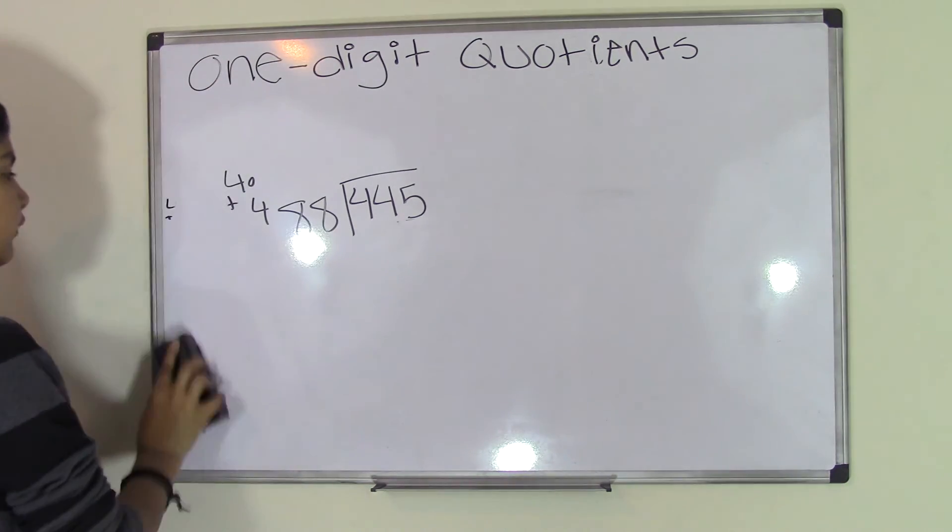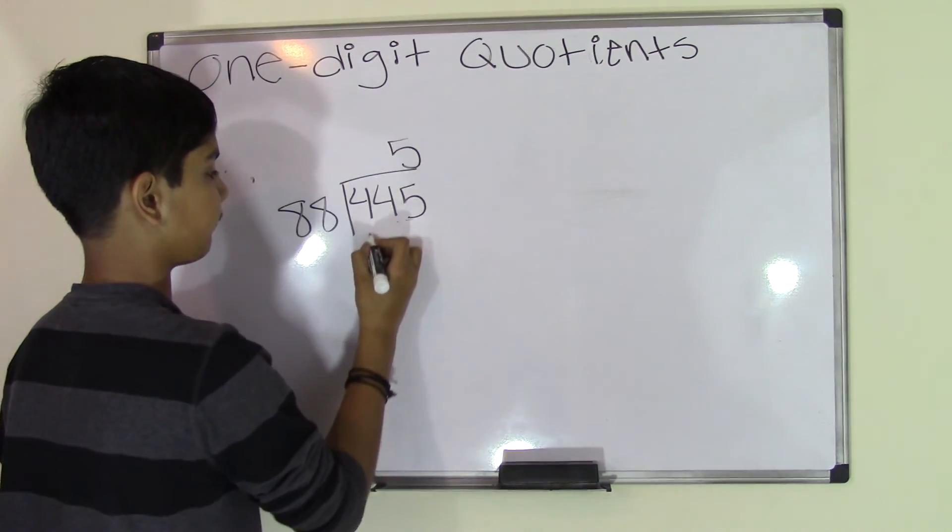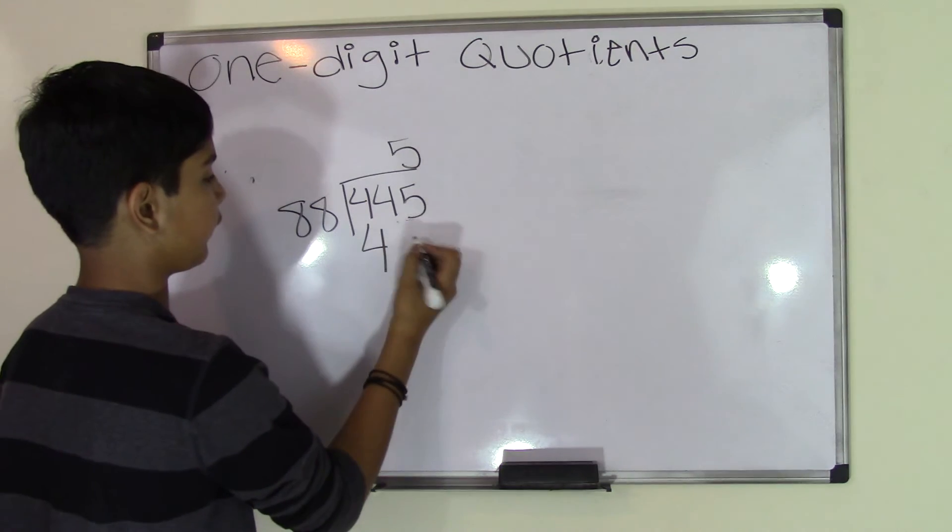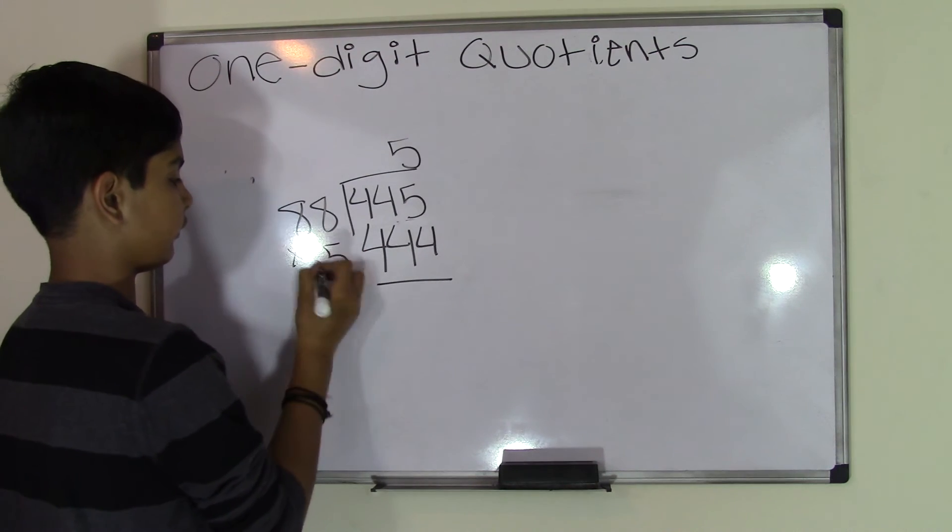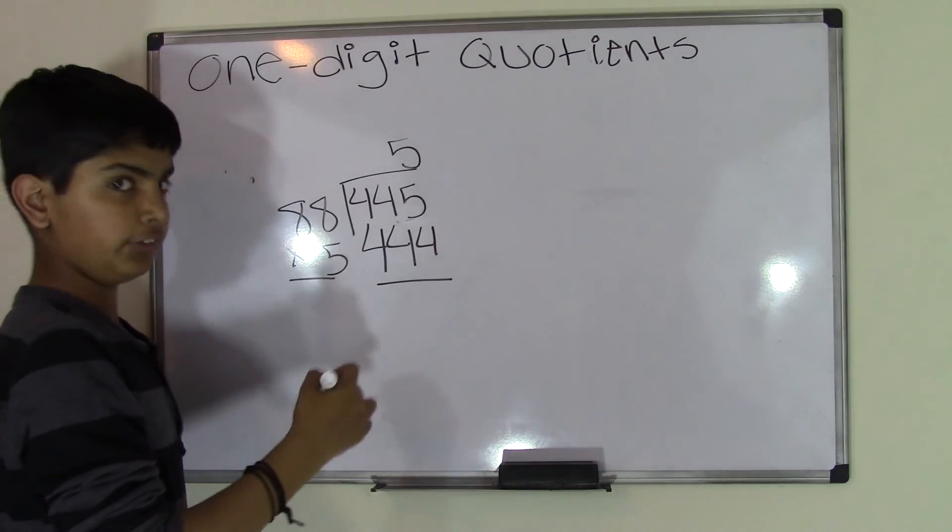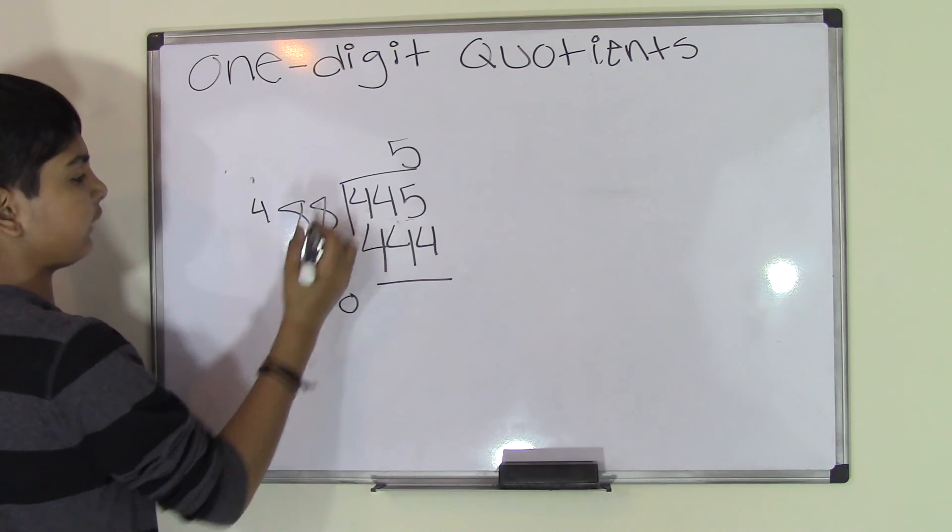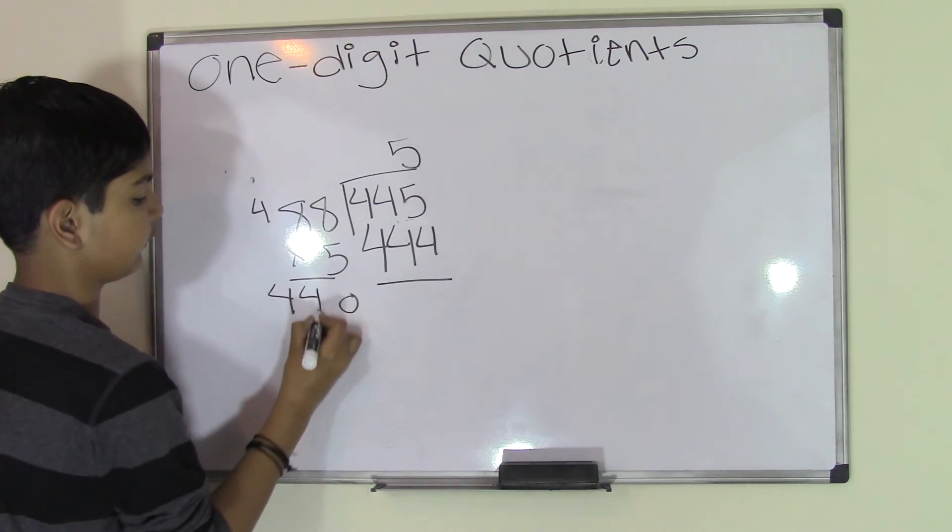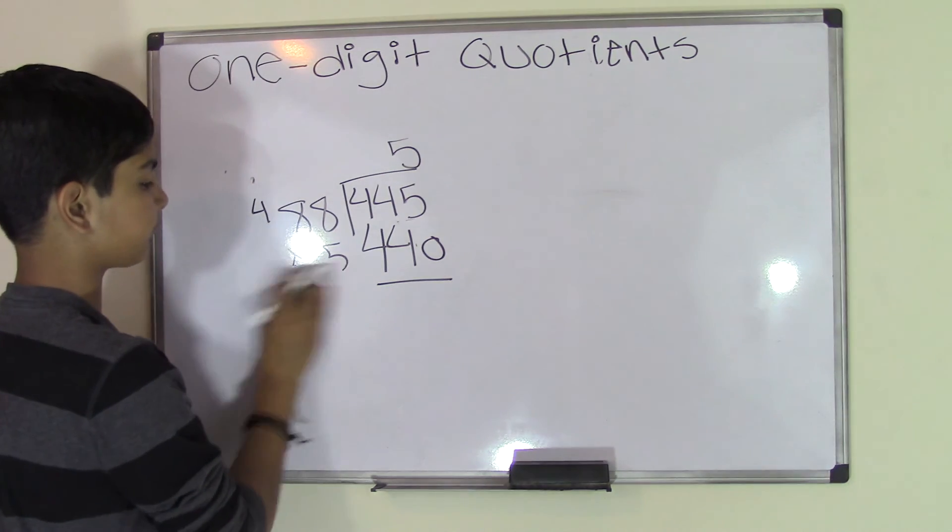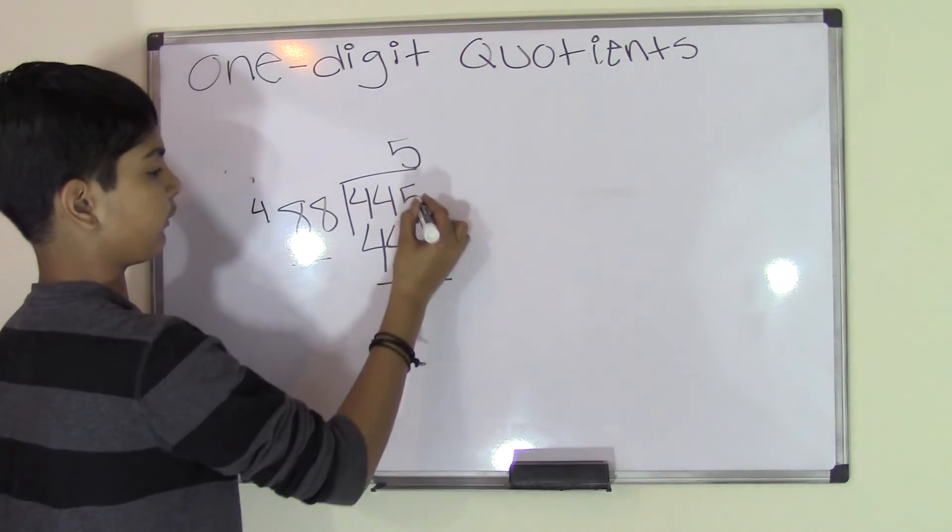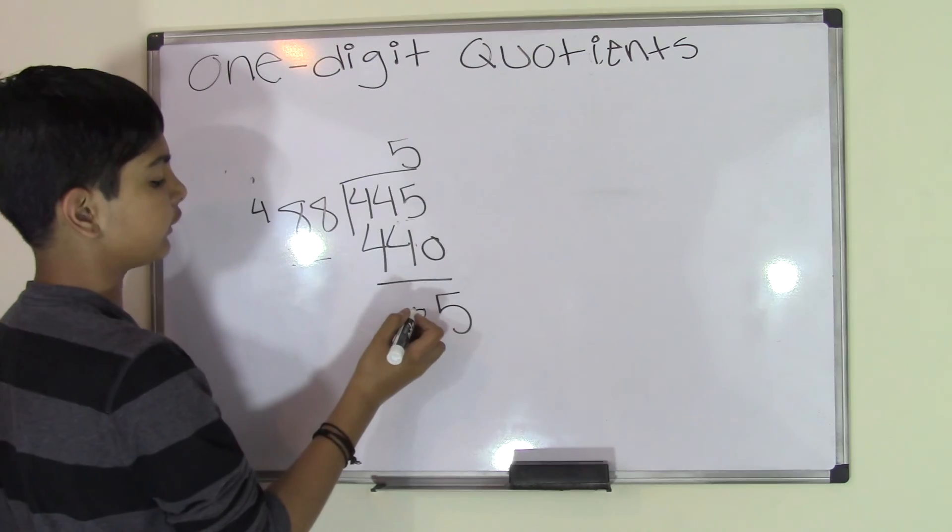So 88 times 5 is 440. Now we subtract. 5 minus 0 is 5. 4 minus 4, it goes evenly, 4 goes into 4 evenly, so we get 0. So now we have a remainder of 5, since we cannot do further more with the 5.